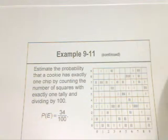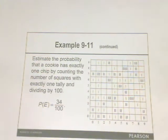As you can see in this particular situation here, you want to estimate the probability that a cookie has exactly one chip by counting the number of squares with exactly one tally and dividing it by 100.